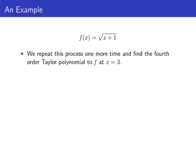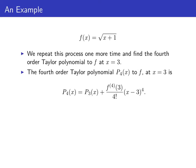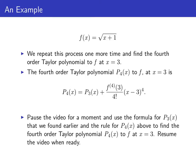Let's repeat this process one more time and find the fourth order Taylor polynomial to f at x equals three. p sub four of x is p sub three of x plus the fourth derivative of f evaluated at three divided by four factorial times x minus three to the fourth. Use the formula for p sub three of x and find a formula for p sub four of x. Resume the video when you're ready.